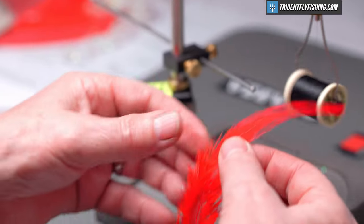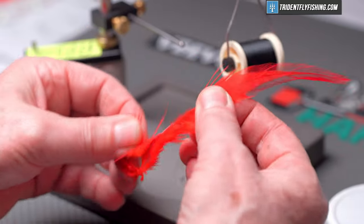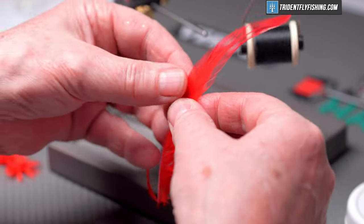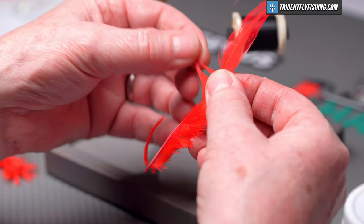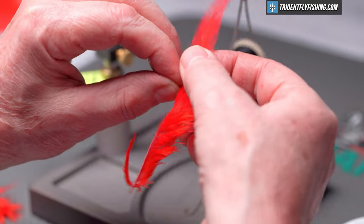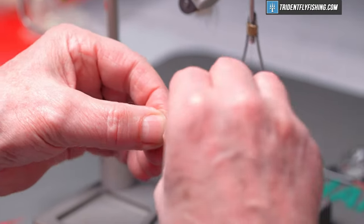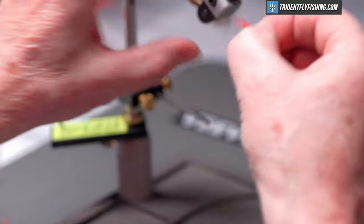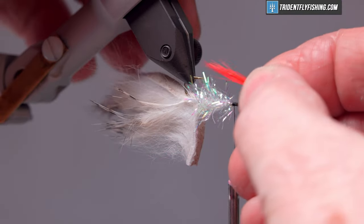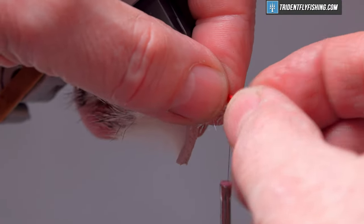We'll tie in our throat which is just going to be some strong saddle hackle in the color red. Tear off a bunch of these fibers and pull them out even to the stem to even them up. We want this to go back to about the hook point and we'll tie these in so they're about touching the point of the hook.